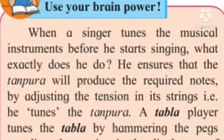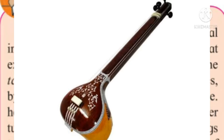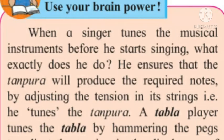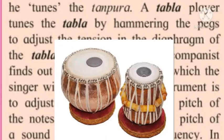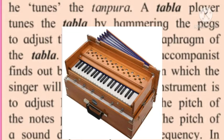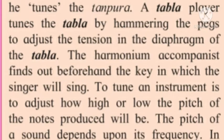He ensures that the tanpura will produce the required notes by adjusting the tension in its strings, that is, he tunes the tanpura. A tabla player tunes the tabla by hammering the pegs to adjust the tension in the diaphragm of the tabla. The harmonium accompanist finds out beforehand the key in which the singer will sing. To tune an instrument is to adjust how high or low the pitch of the notes produced will be. The pitch of a sound depends upon its frequency.